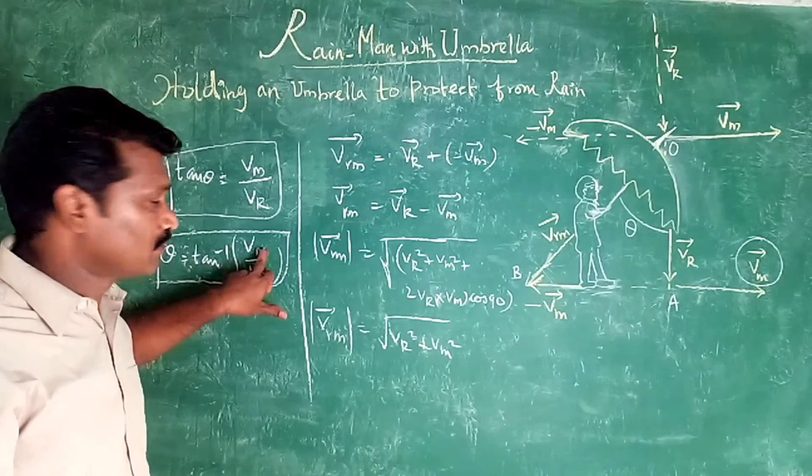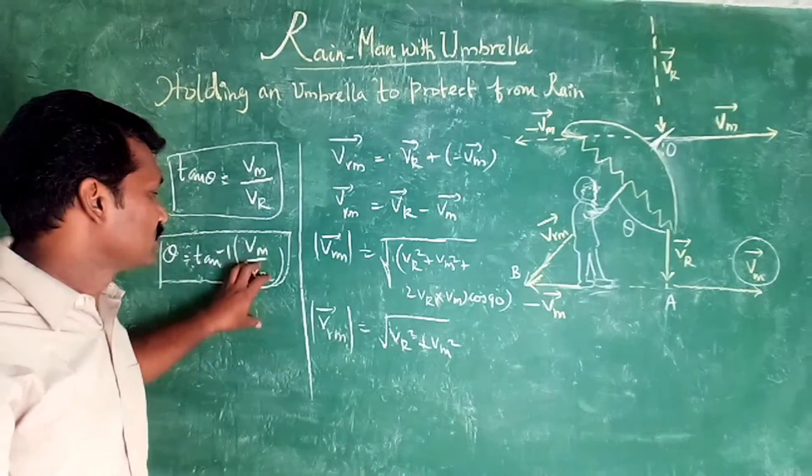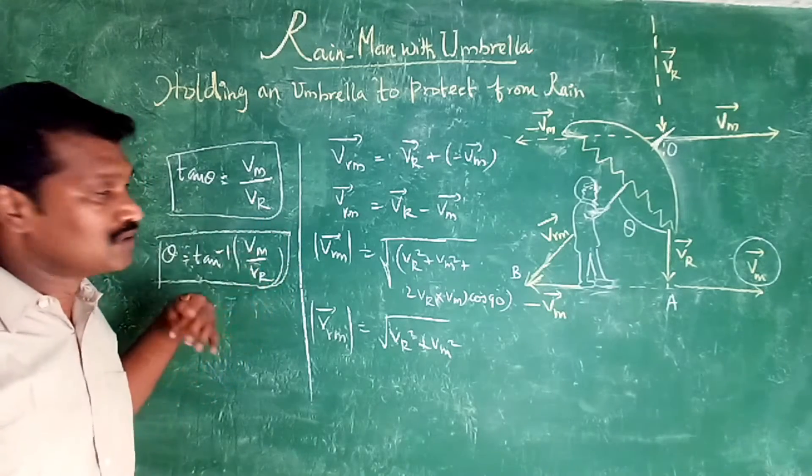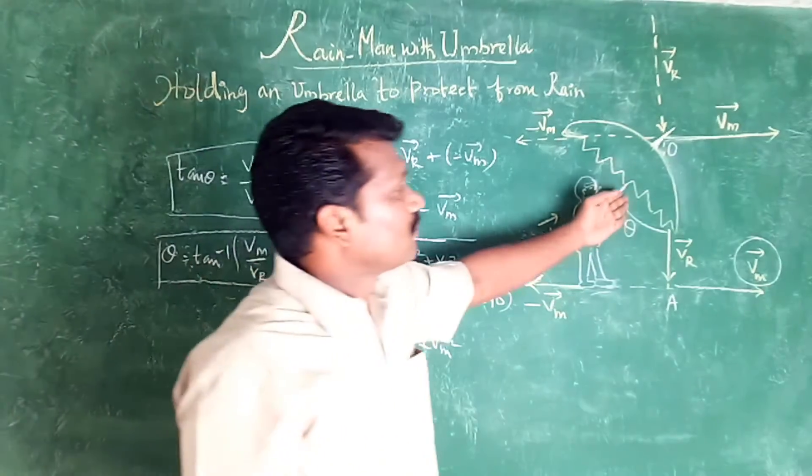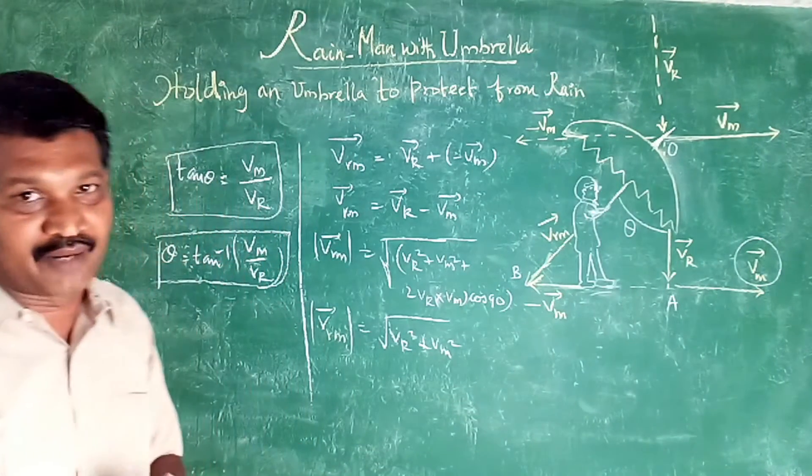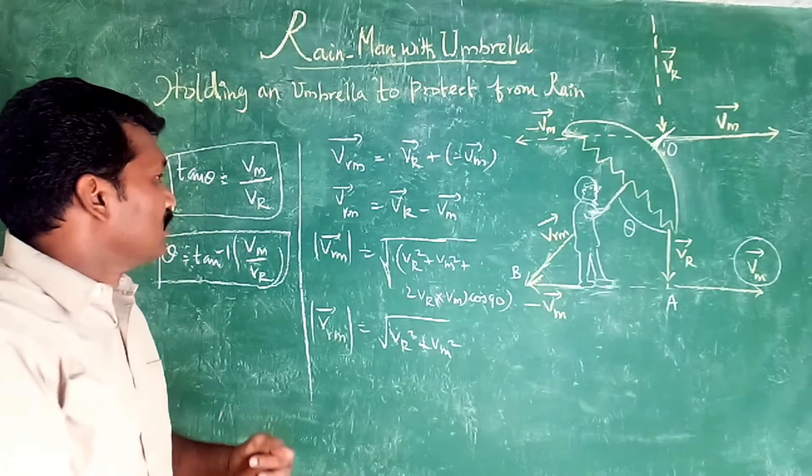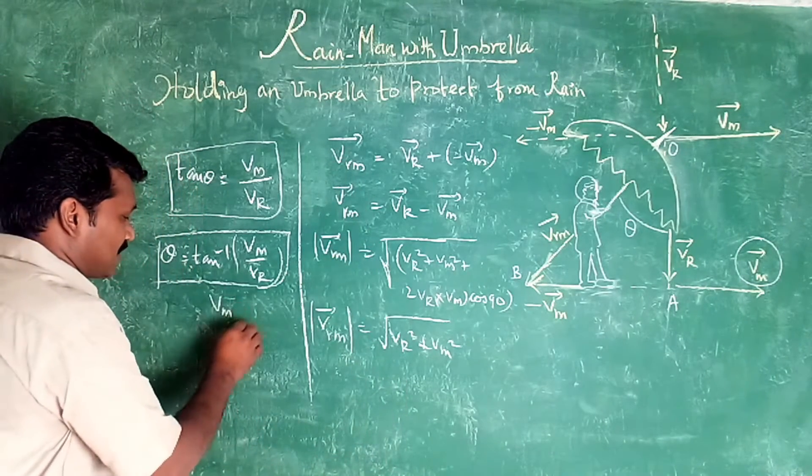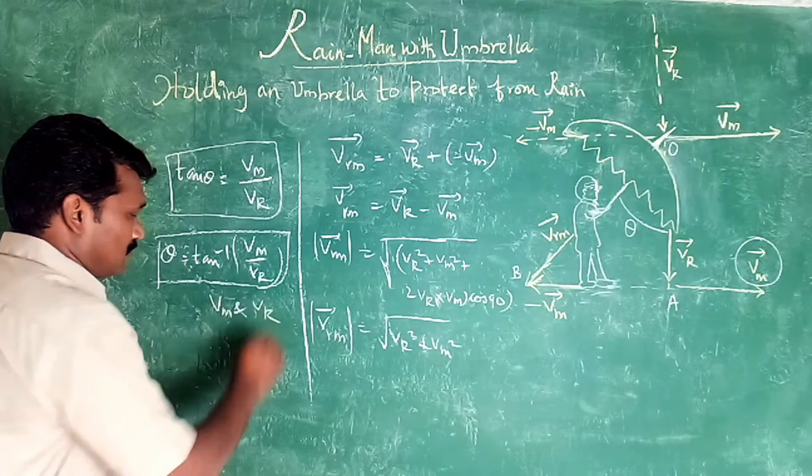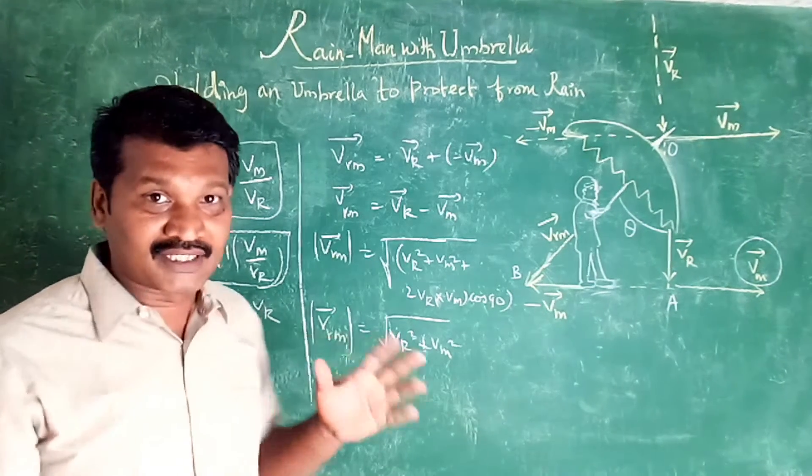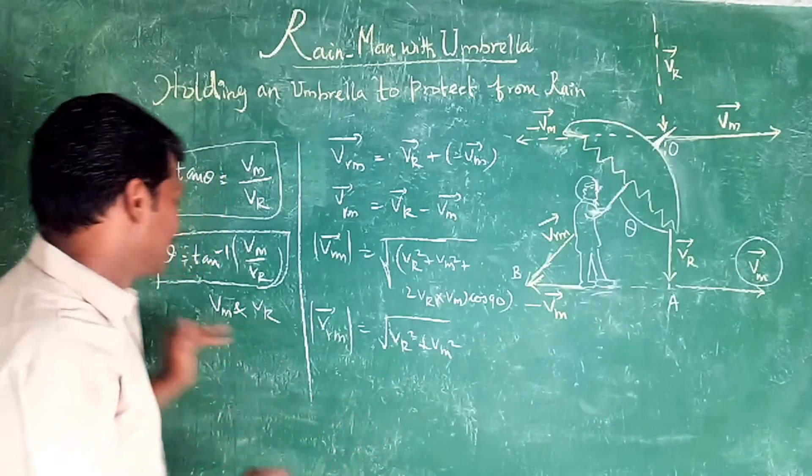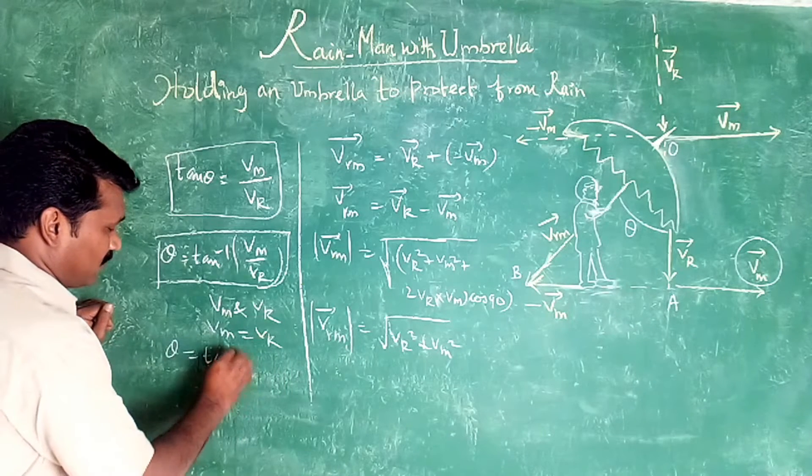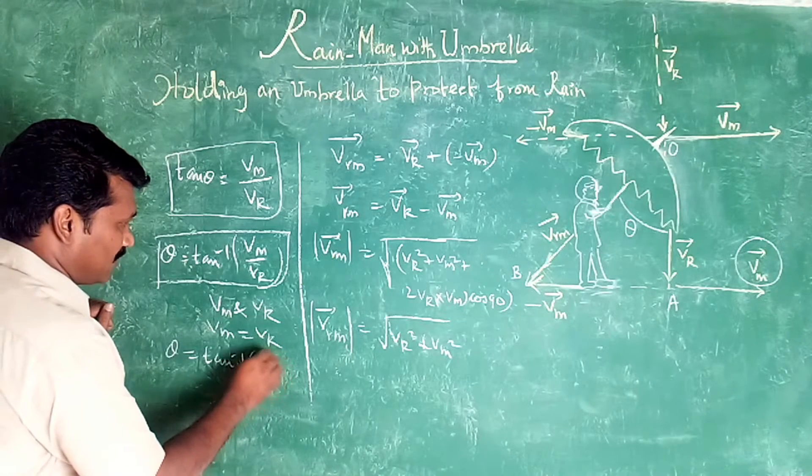So he has to hold about this much angle above velocity of man, to last side of man, to tan inverse of Vm. Until he has to hold his umbrella to protect him from rain. So you can find the same way the power of velocity.